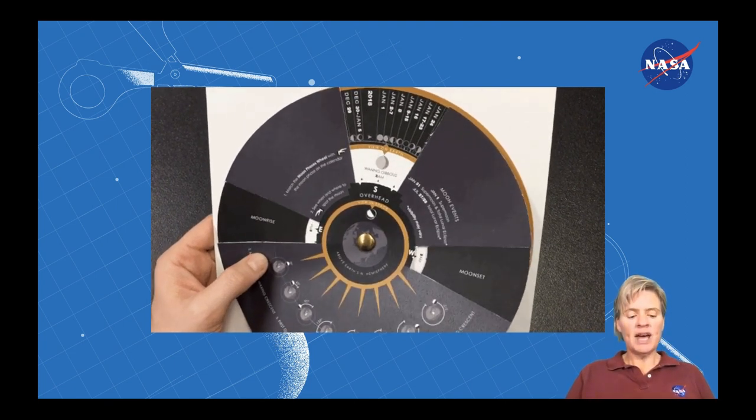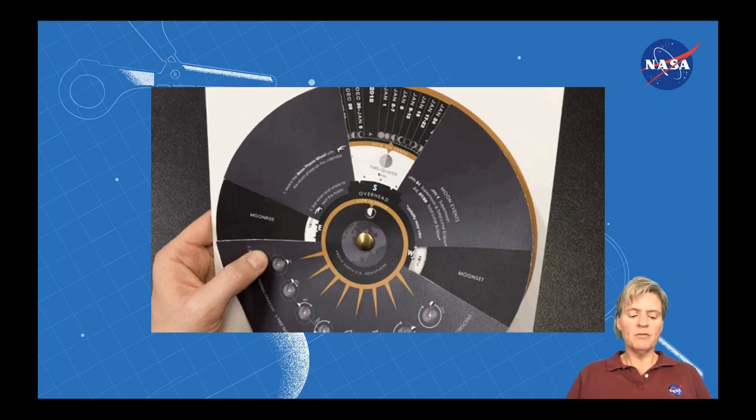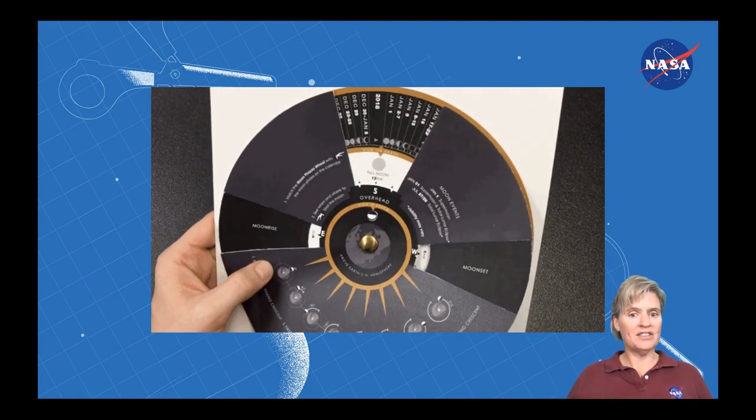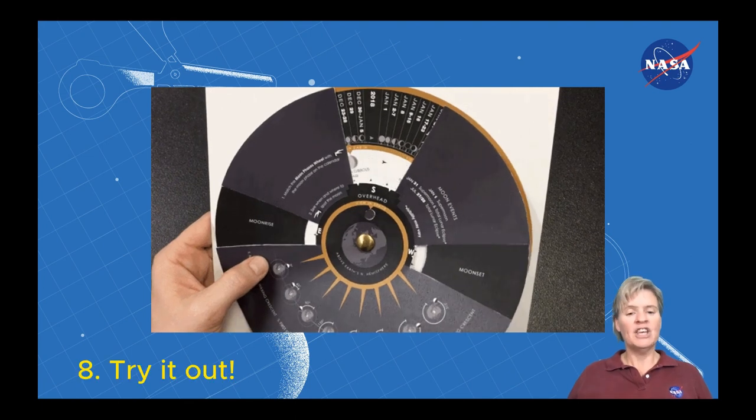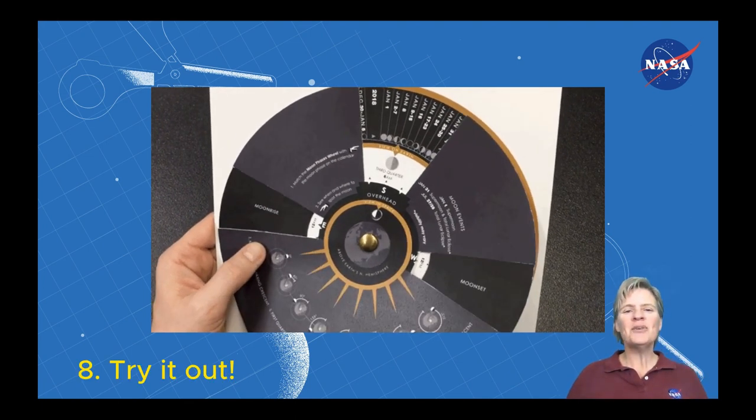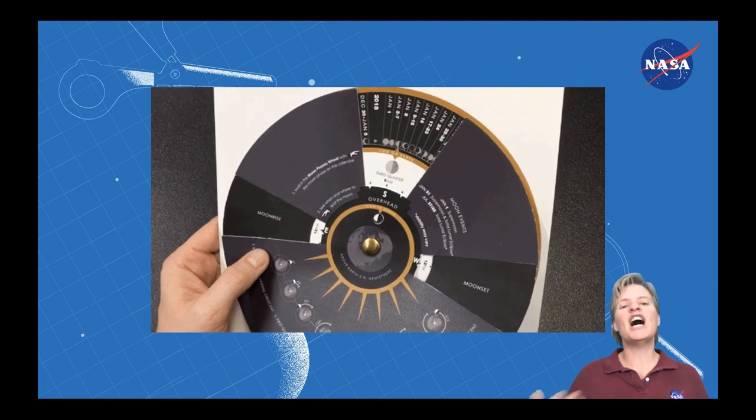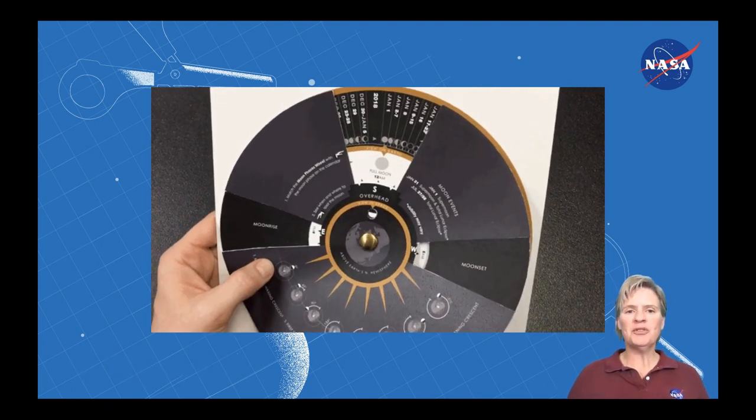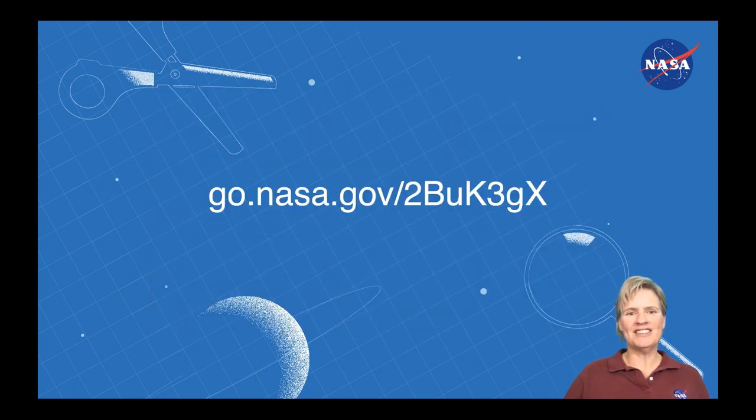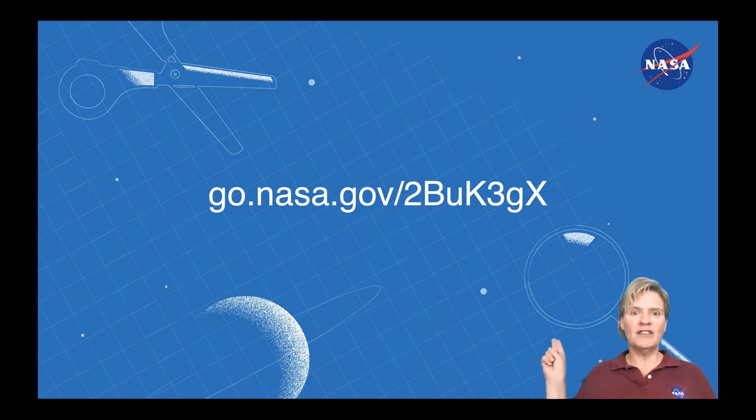And you'll see the moonrise tells you that it rises in the east at a particular time. And it sets in the west at a particular time. So it takes a little practice, but I think you can get used to it. And hopefully this will help you anticipate what time of day to see a particular moon phase and to be able to observe and have a good time with this. If you would like more specific instructions, take a look at this link. It gives you all the steps. Have a good time viewing the moon.